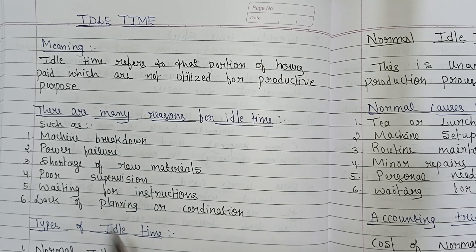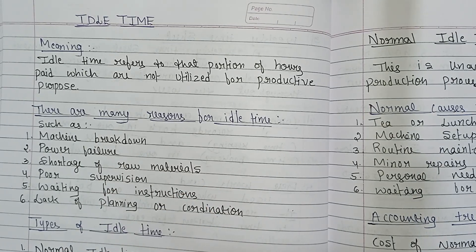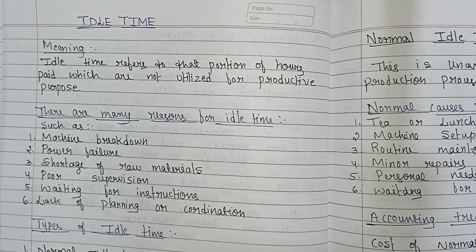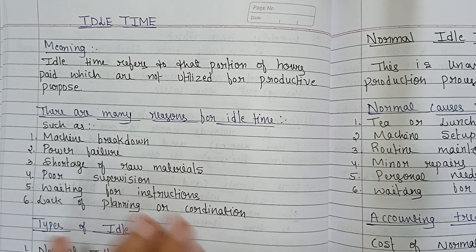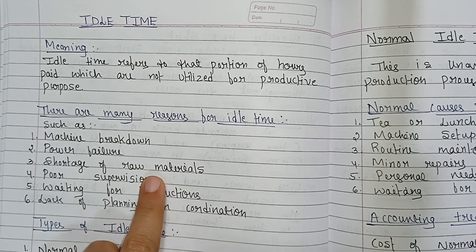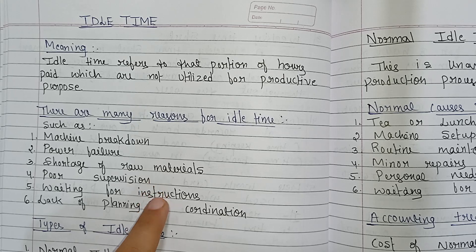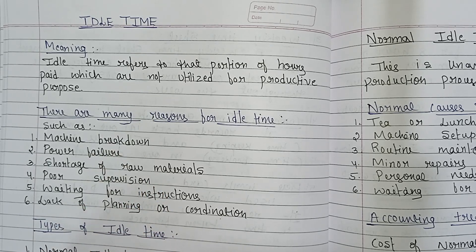There are many reasons for idle time, such as machine breakdown — where production stops when machines stop working unexpectedly. Second is power failure, where work gets interrupted due to electricity outages. And shortage of raw materials — workers have to wait when materials are not available on time, but they are still being paid.